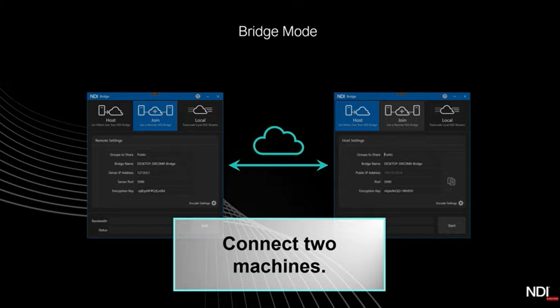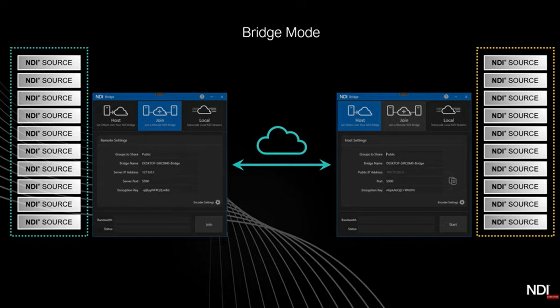In bridge mode, the host has a public IP address and a port — you've spoken with IT or you're the network administrator and have opened a port for port forwarding. You may also have set an encryption key to encrypt all video over the public internet. On the join side, you need this same information so that the bi-directional capabilities of NDI Bridge can work.